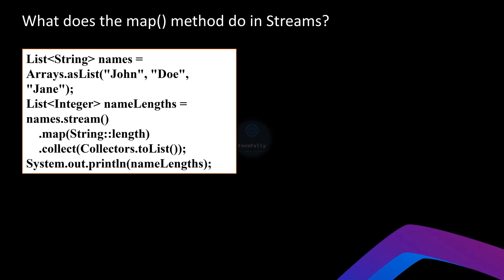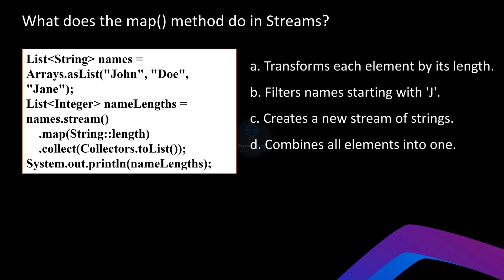The first question is: what does the `map` method do in a stream? Here are the options — first: transforms each element by its length; second: filters names starting with J; third: creates a new stream of streams; and last: combines all elements into one. Let's take a look at the following code snippet.